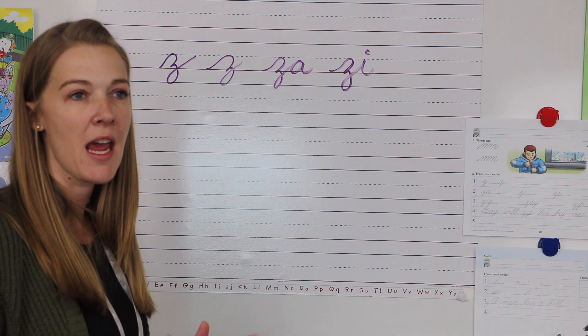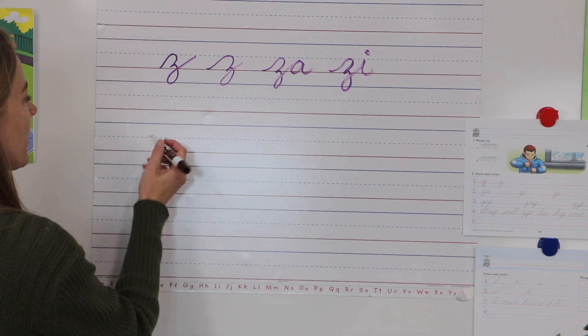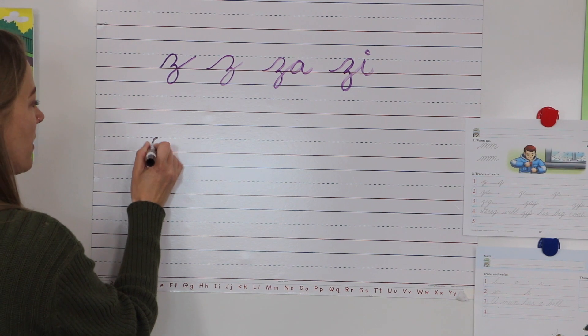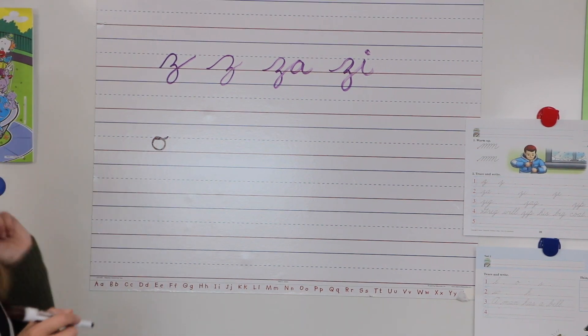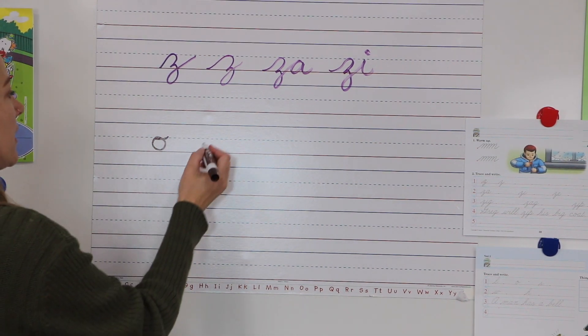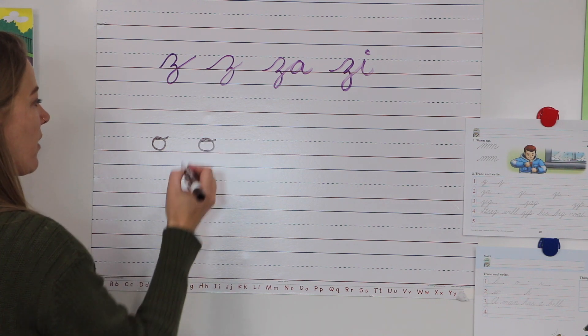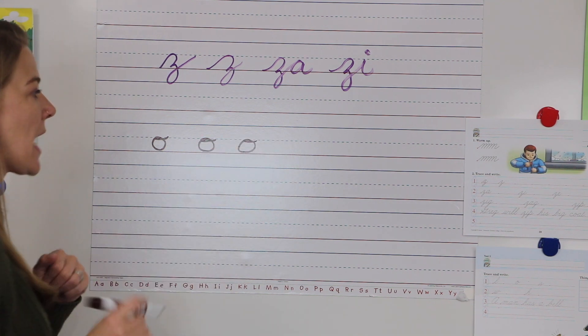So with an O, you start up top and you give it a hairdo. You start at the top, give it a hairdo. Start at the top, give it a hairdo.